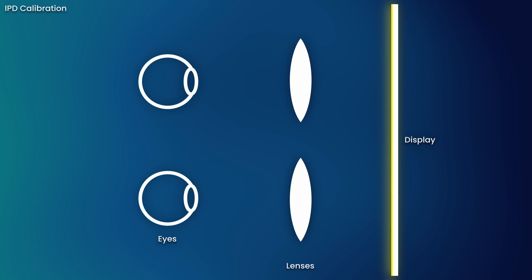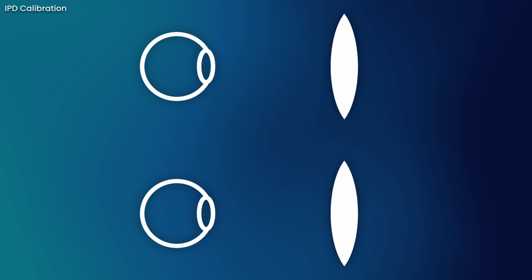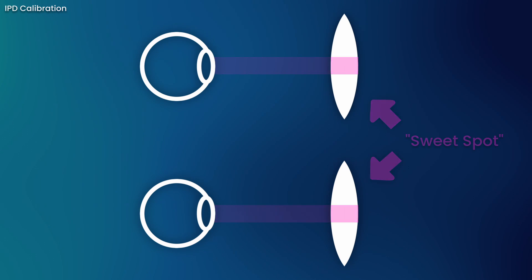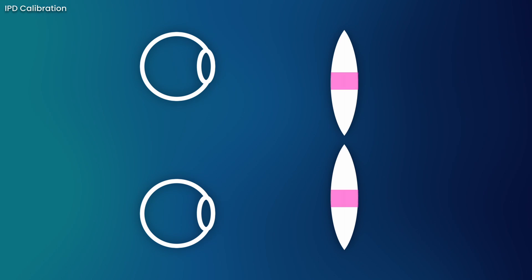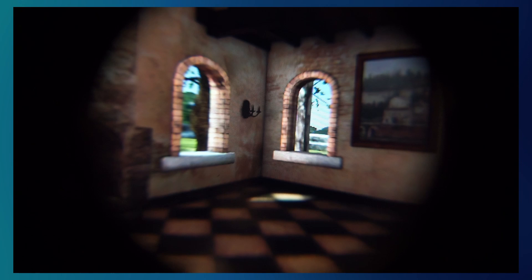VR optics generally have what's called a sweet spot — a location usually around the centre of the lens that provides very high pixel density and image clarity. If this is misaligned with your pupil, the view may appear blurry in areas directly in front of you, and you won't get the full benefit of the headset's peak pixel density.